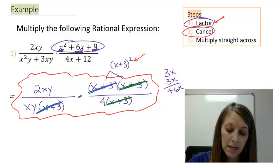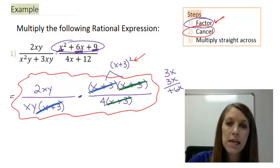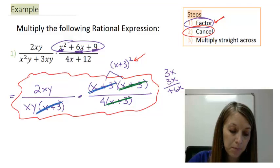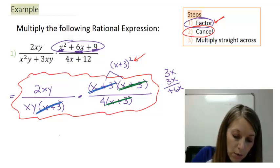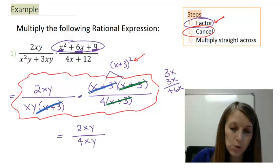Also notice I have a second x plus 3, which I can cancel with this x plus 3. So as long as it is in any numerator and denominator, it can be directly on top of each other or in separate fractions, they can cancel. You can only do it one at a time. So let's see what I have left at this time. On the top, all I have left is a 2xy. And on the bottom, I have xy times 4, so that leaves me with a 4xy.